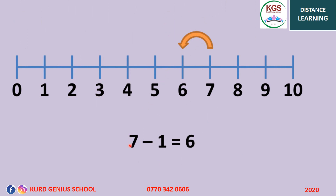7 minus 1. We count from 7. We count back only one number. We are on 7. We count one number back which is 6. So 7 minus 1 equals 6.